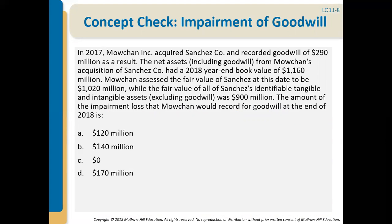Let's do a concept check for goodwill impairment. In 2017, Mochan Inc. acquired Sanchez Company and recorded goodwill of $290 million. The net assets including goodwill for Mochan's acquisition of Sanchez had a 2018 year-end book value of $1,160 million. Mochan assessed the fair value of Sanchez at this date to be $1,020 million, while the fair value of all of Sanchez's identifiable tangible and intangible assets excluding goodwill was $900 million. What is the amount of impairment loss that should be recorded for goodwill at the end of 2018?